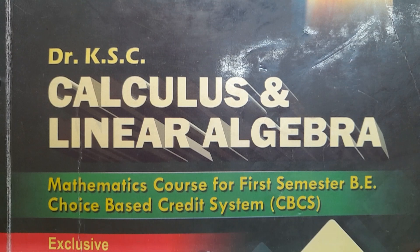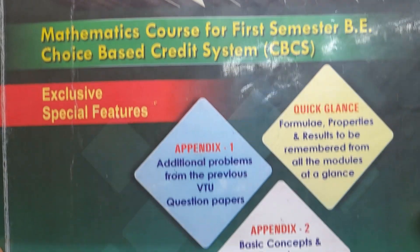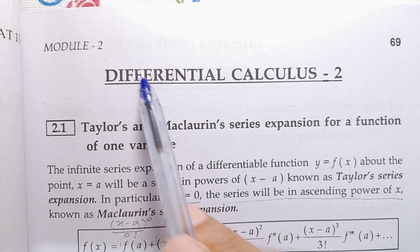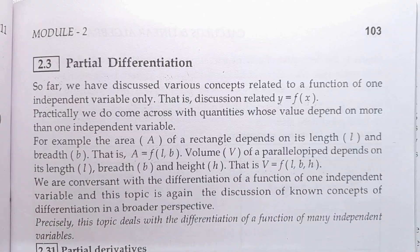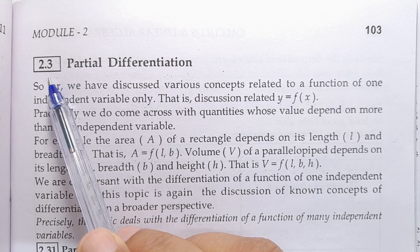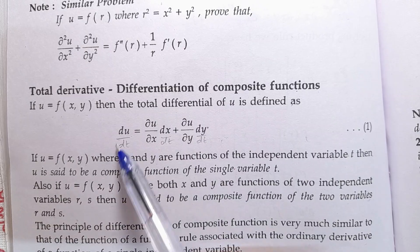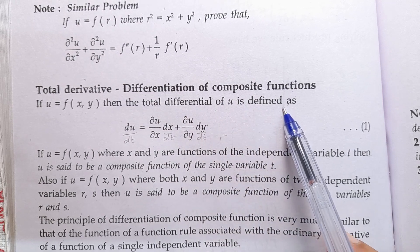Subject: Engineering Mathematics for First Semester BE. Name of the book author: Dr. K.S.C. Module 2, Differential Calculus 2. Article No. 2.3: Partial Differentiation, Total Derivative, and Differentiation of Composite Functions.